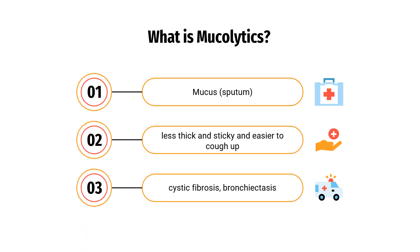Mucolytics divide into two subgroups. The first is classic mucolytics. This subgroup includes N-acetylcysteine, carbocysteine, erdostine, and fudostine. Disulfide bonds are building blocks of many complex proteins, including mucus. N-acetylcysteine (NAC), the prototype drug of this class, possesses a reducing ability and works by the thiol-disulfide interchange mechanism. The mucin polymers have cysteine residues throughout their structure.